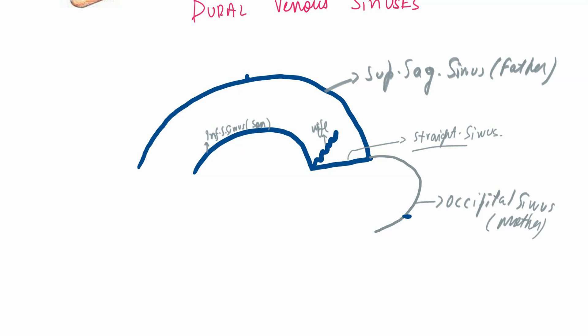The inferior sagittal sinus and his wife go on to have two sons. One may be called the transverse sinus, or we call it the lateral sinus — here is the left, and on the opposite side, the right transverse sinus.